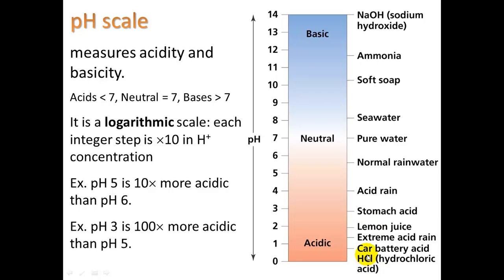We can see a range here: lemon juice is highly acidic, car battery acid is very acidic, normal rainwater is slightly acidic, acid rain can be as acidic as pH 4.0. Soap is basic, and seawater is slightly basic. One big point: the pH scale is logarithmic, which means every integer step is a change of 10 times in hydrogen ion concentration. So pH 5 is 10 times more acidic than pH 6, and pH 3 is 100 times more acidic than pH 5 — because that's two steps, and each step is times 10, so times 10 times 10 equals times 100.